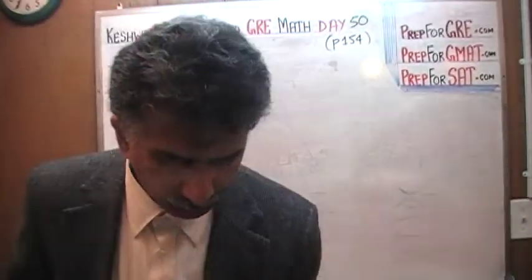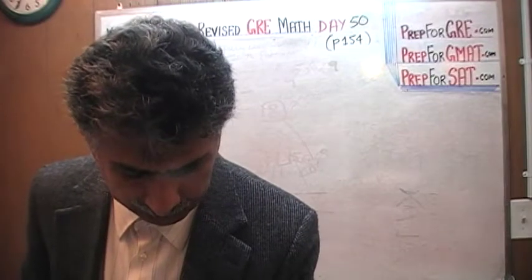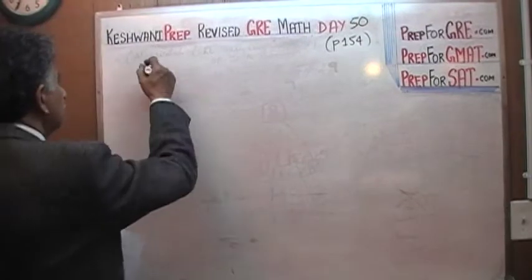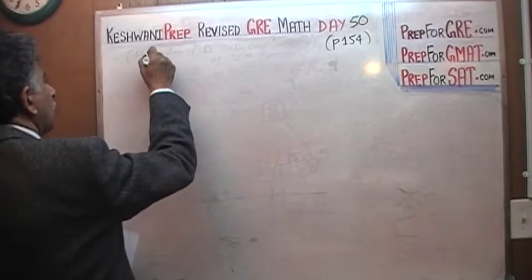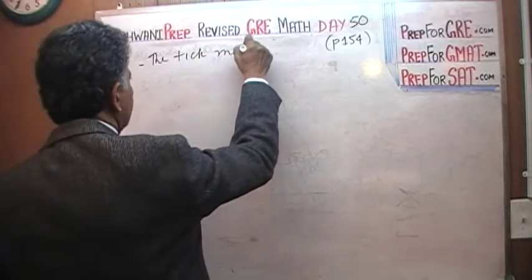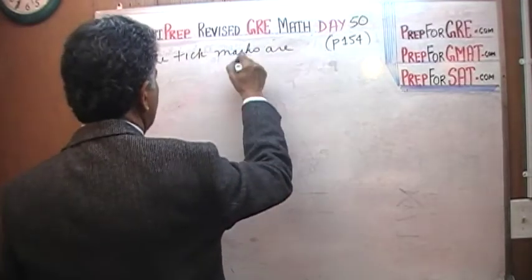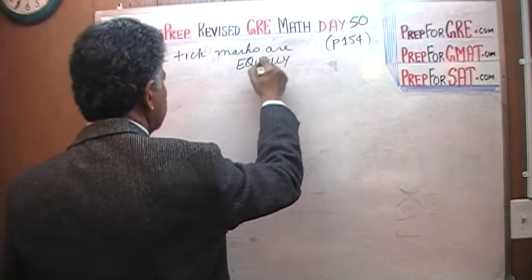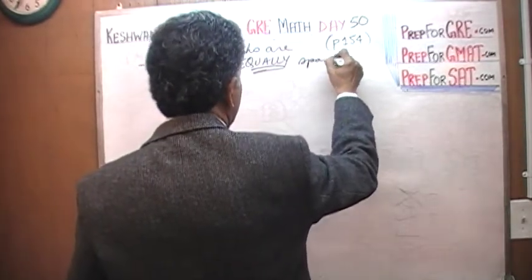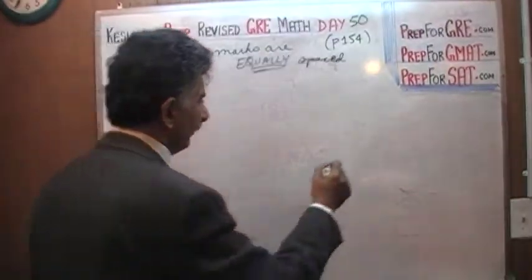Let's take a look at it. The bottom problem that you see there on page 154. It says, on the number line shown above, the tick marks are equally spaced. That is the key part. The tick marks are equally spaced. That is the most important part here.